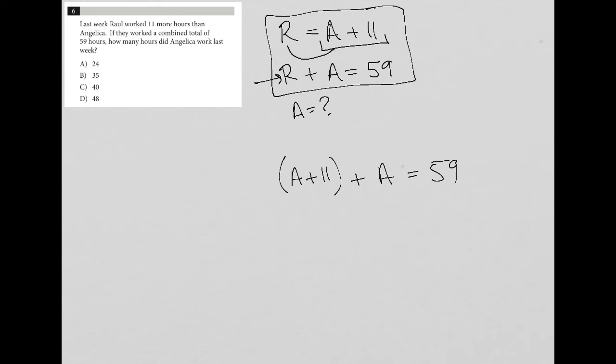Now, how did I know to do that? So on this test, any time I'm given a variable in terms of another variable, usually we're going to use substitution. So if a variable, in this case R, Raul, the unknown amount of hours that Raul has worked, we're given this information in terms of, or in relationship to Angelica, this A plus 11.